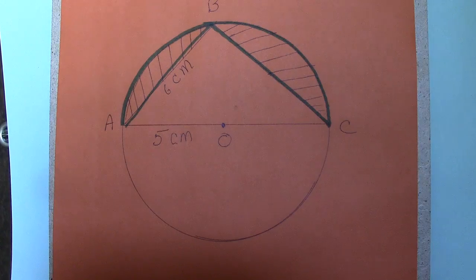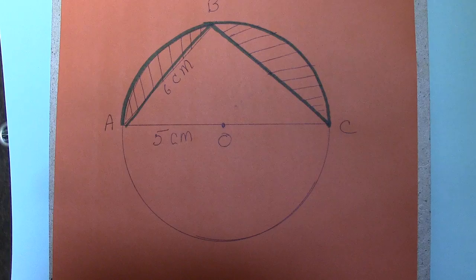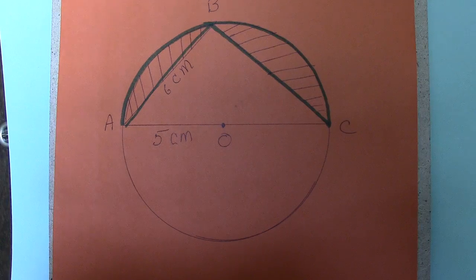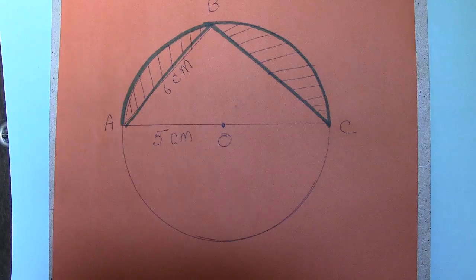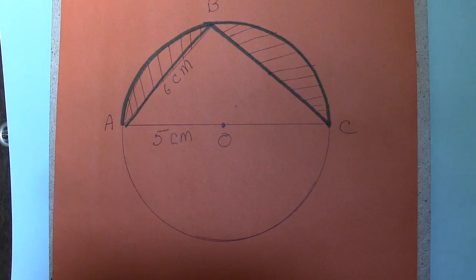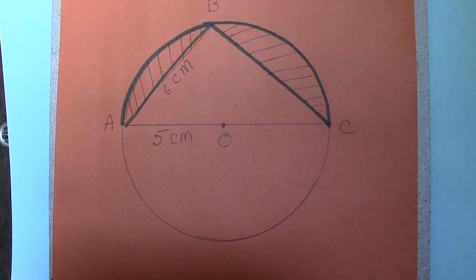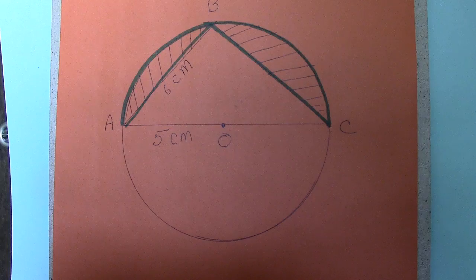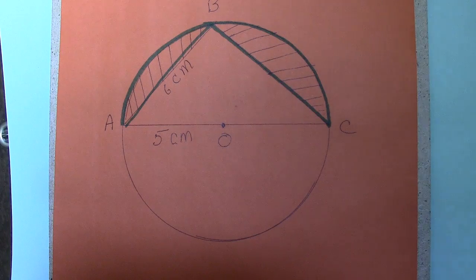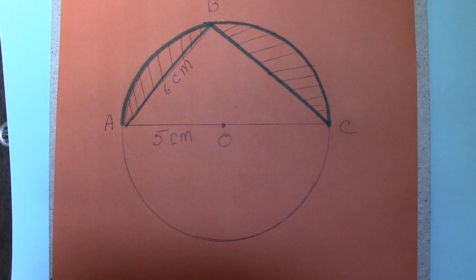So in any case, let's see what is the arc ABC. The arc ABC is half the circumference. And the circumference is given by the formula 2πr. So the arc ABC is πr. But the radius is 5. So the arc ABC is 5π.